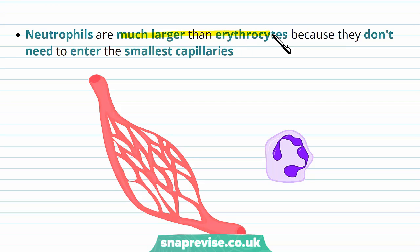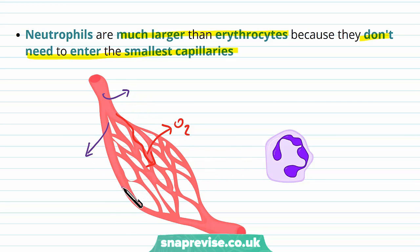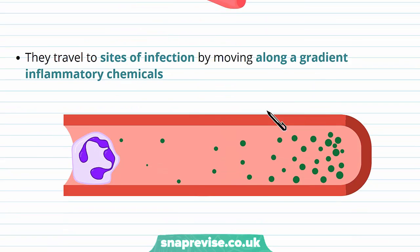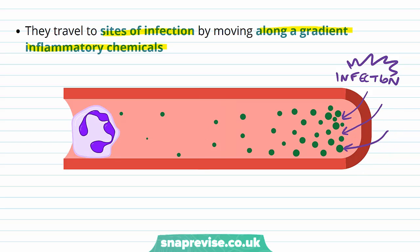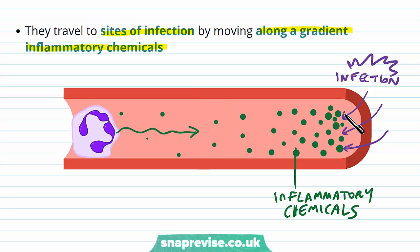Neutrophils are very large compared to erythrocytes, which are quite small, because they don't need to enter the smallest capillaries. The erythrocytes need to get into capillaries to deliver oxygen, but white blood cells don't need to do this. They are often found entering larger vessels or leaving the vessels to enter the tissues where infection could occur. For example, if you cut yourself on your skin, neutrophils often leave the blood vessel into the region of the skin and start engulfing pathogens. They travel to these sites of infection by following a gradient of chemicals known as inflammatory mediators, which are released from the site of damage.